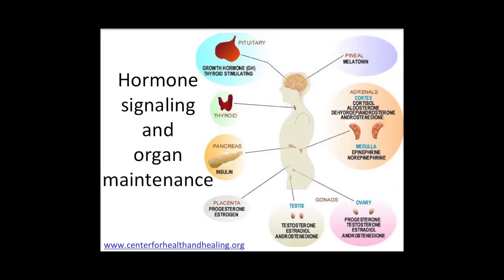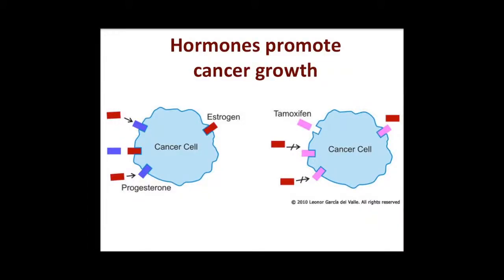Hormones, which are critical to every function of the body, are the way the body communicates across organs — the way the brain talks to the gut, the way the gut might talk to bones. And yet they can be messed up and intervene in the growth signaling of cells. Here's an example of how the normal function of estrogen and progesterone, if improperly expressed on tumor cells, allows those cells to grow unavoidably, and how that can be blocked with tamoxifen — an anti-estrogen that will bind to that site and prevent the estrogen from getting in.